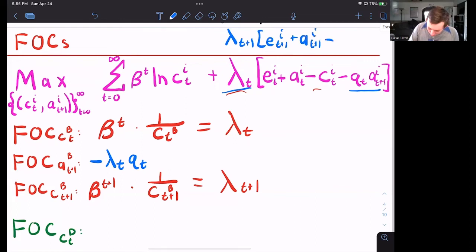So notice that AT plus one appears again in the budget constraint next period. So when we're taking this first order condition, we need to keep that other budget constraint in mind. So this is also going to say plus lambda T plus one is equal to zero. This just means that QT is equal to lambda T plus one over lambda T.